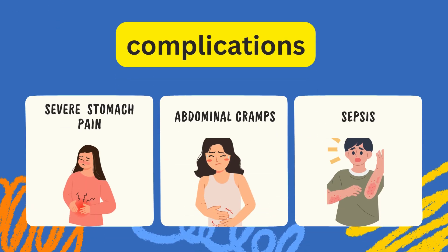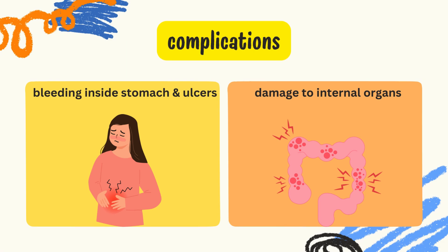Complications due to typhoid fever include severe stomach pain, abdominal cramps, sepsis, bleeding inside the stomach and ulcers, and damage to internal organs.